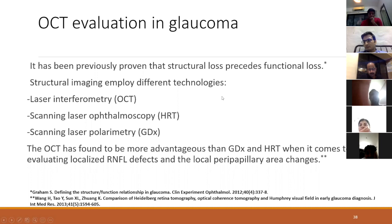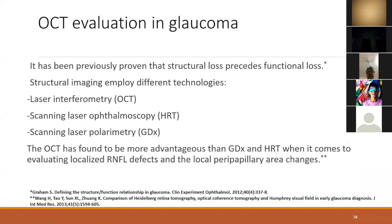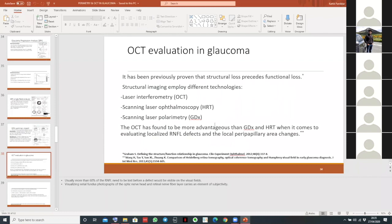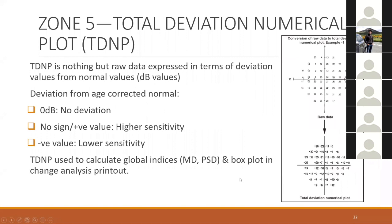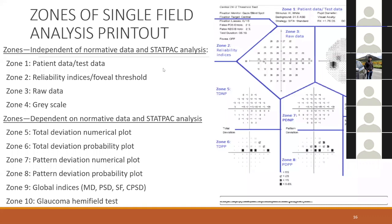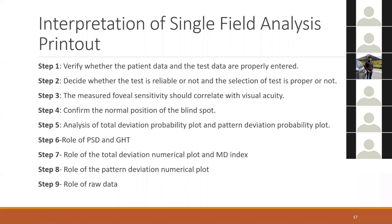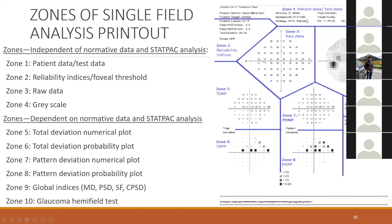Moving to OCT for structural evaluation: numerous studies have shown that structural loss tends to precede functional loss, and about 60% of the RNFL needs to be lost before any field loss can be detected. The three main imaging modalities are OCT, HRT, and GDx. OCT has been found superior to GDx and HRT for glaucoma practice through multiple studies. OCT has two variants: the older time domain and the newer spectral domain. An important point: every follow-up field should use the same strategy and point pattern; if the strategy differs, fields cannot be compared.